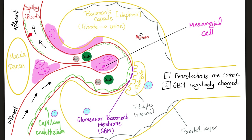Diabetes will destroy your vessels, starting with the efferent arteriole before the afferent arteriole. Diabetes will make your capillary basement membrane very thick thanks to the deposition of type 4 collagen — because type 4 collagen is in the basement membrane. Diabetes will cause a hyperfiltration injury — too much pressure, too much blood filtered. This hyperfiltration is going to injure your mesangium causing mesangial sclerosis, which can lead to proteinuria. The glomerulus will get very sclerosed and hardened, and you can even see something called nodular glomerulosclerosis, or the Kimmelstiel-Wilson nodule.